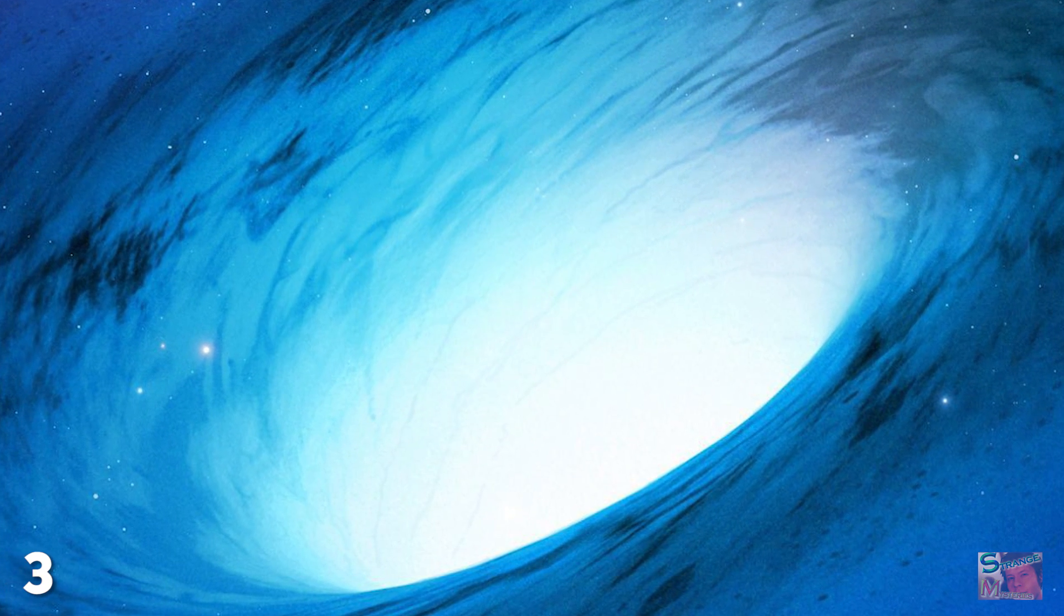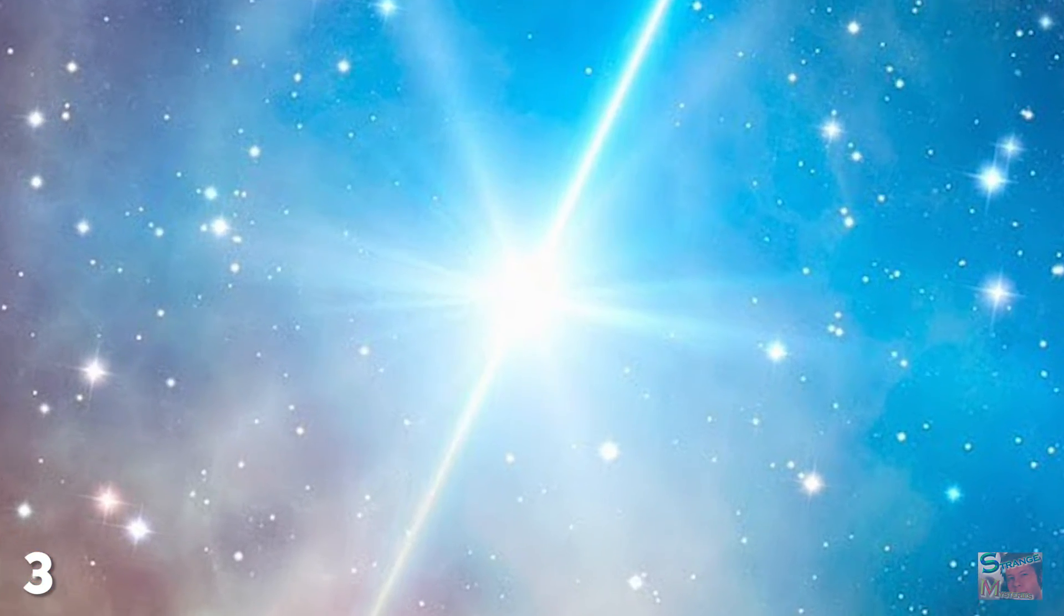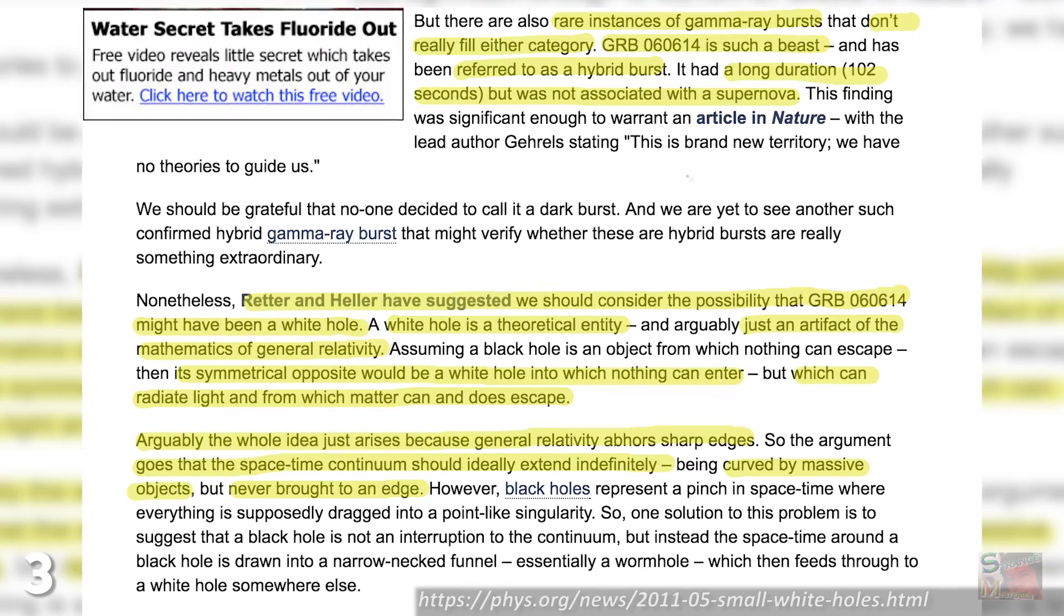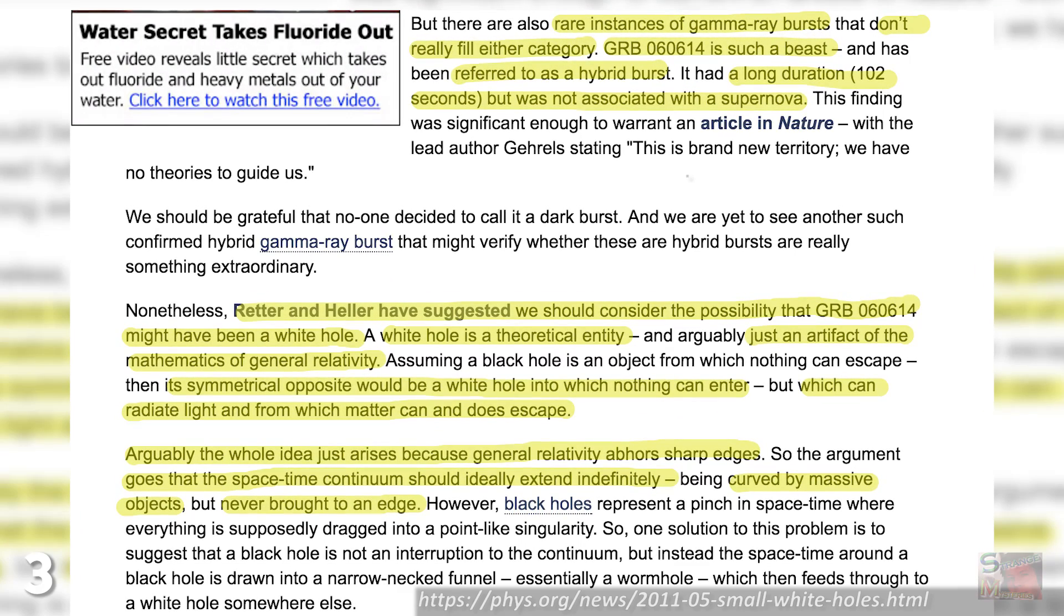Unfortunately, we have no idea how to build a white hole and nor do we know for certain that they exist. The object GRB 060624 has been proposed as our potential for sighting of a white hole, but this is yet to be confirmed.